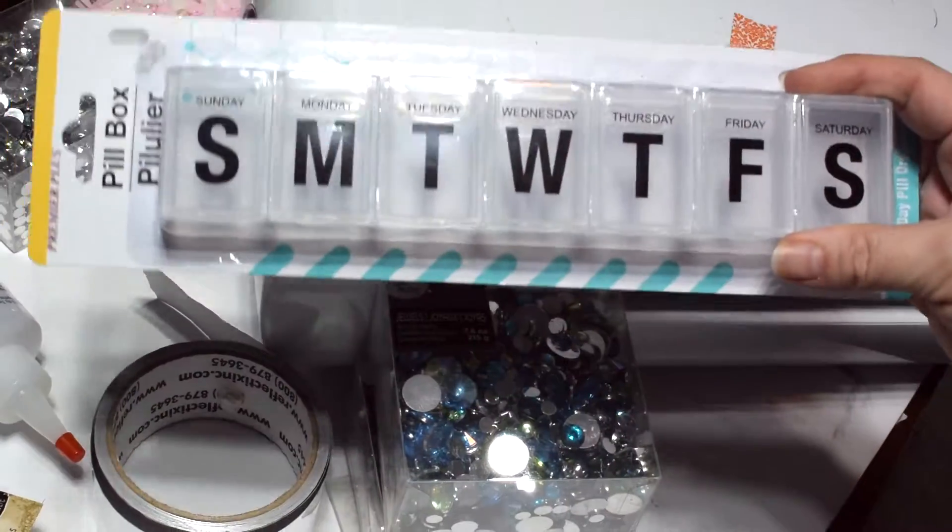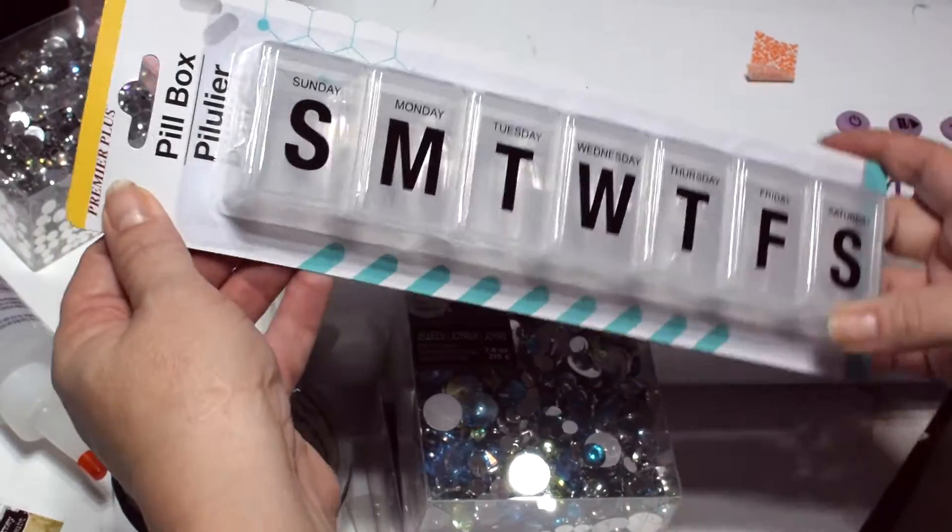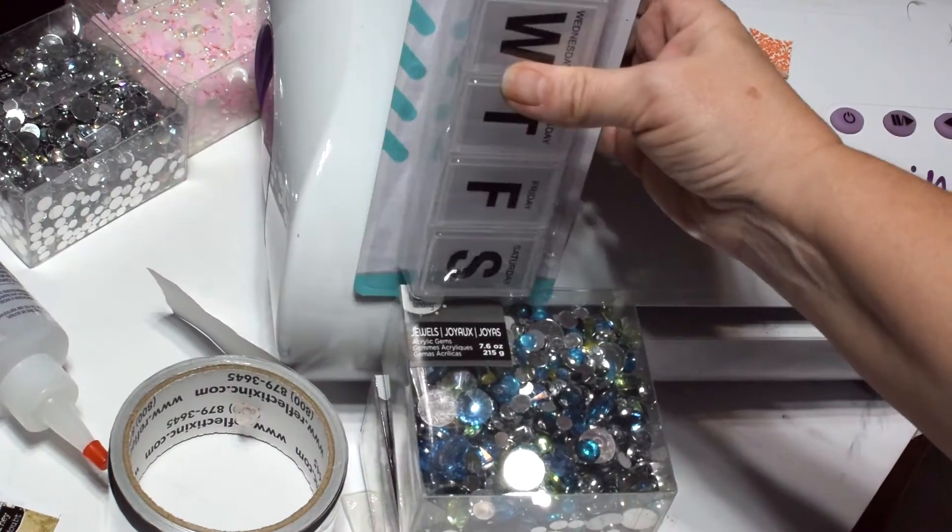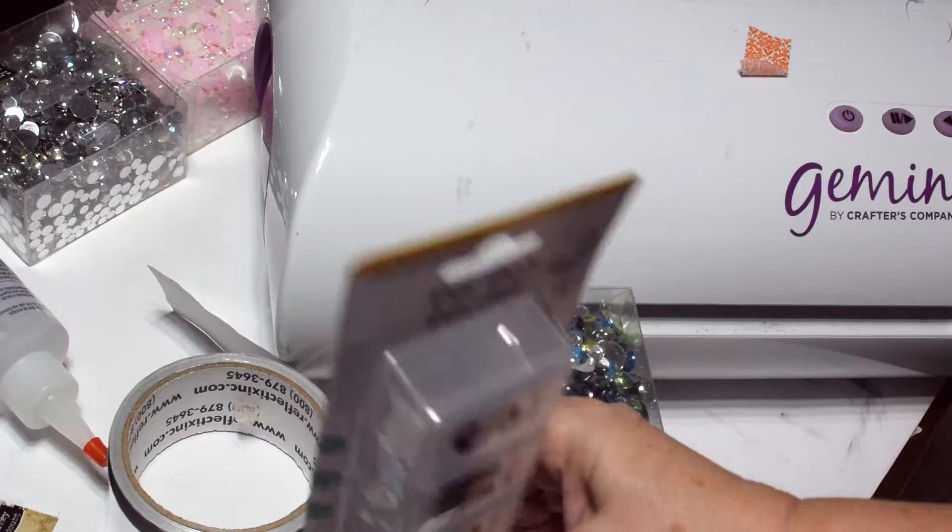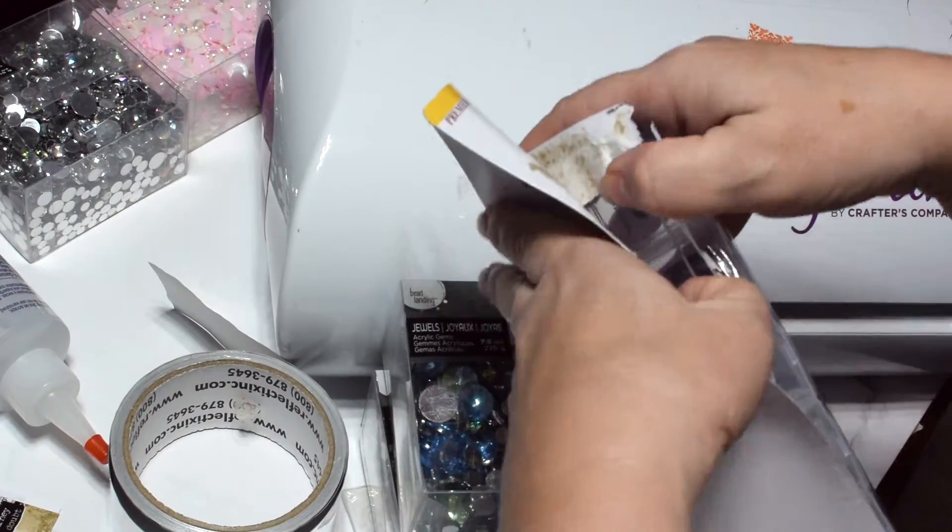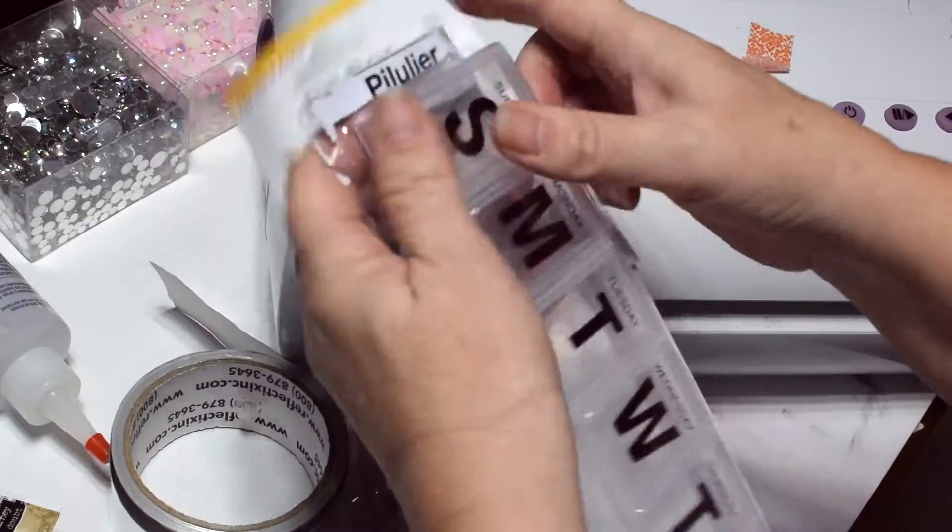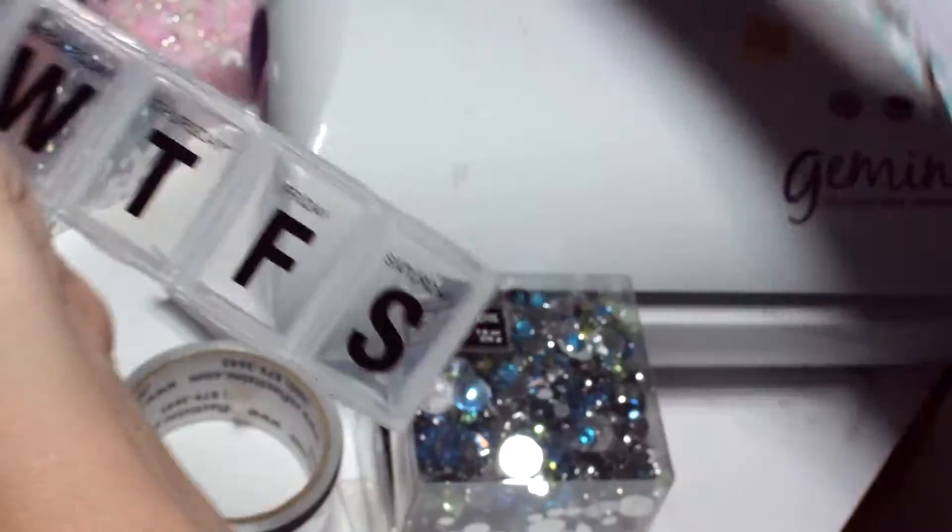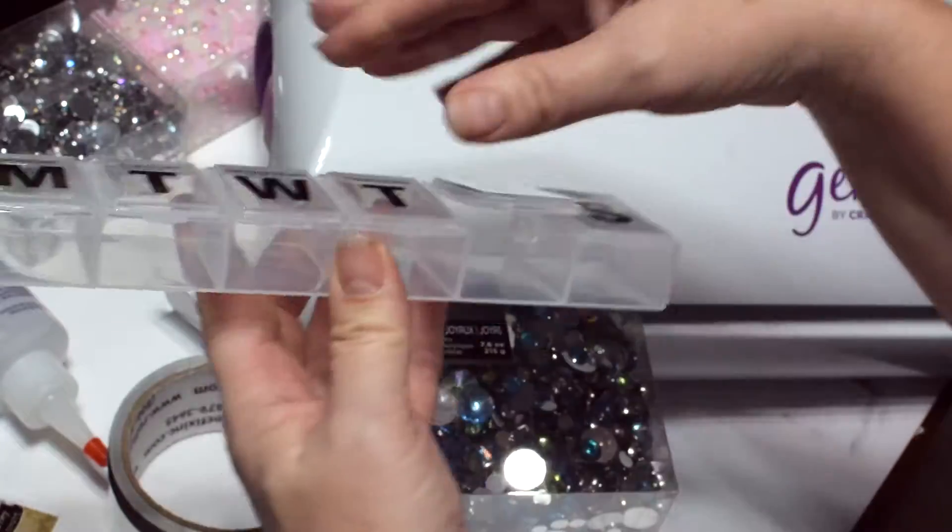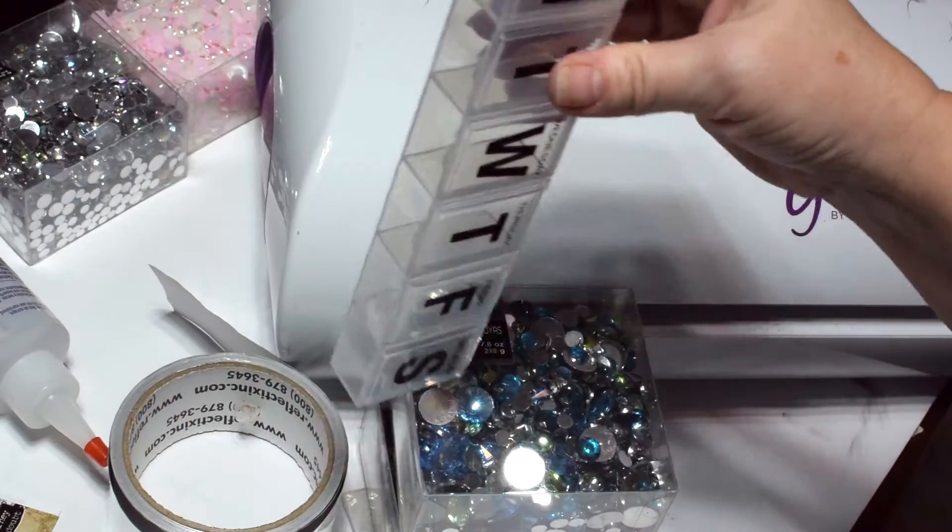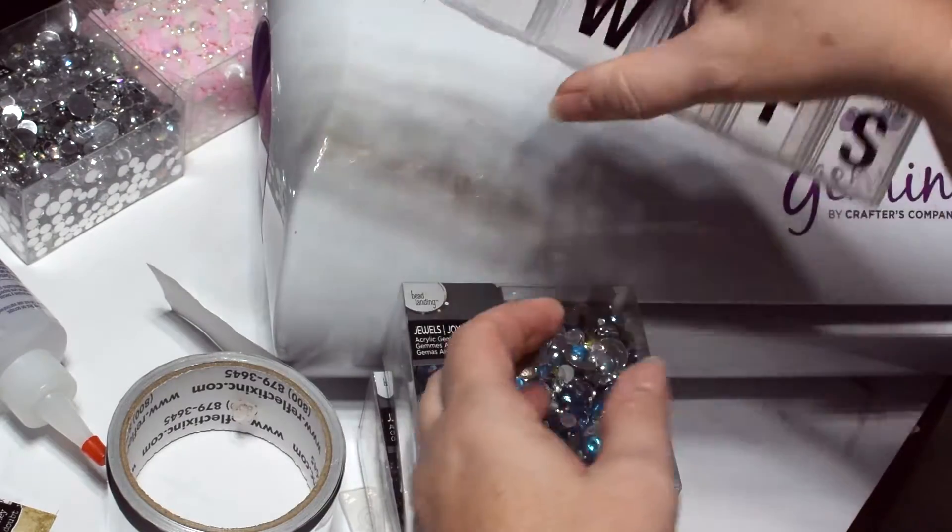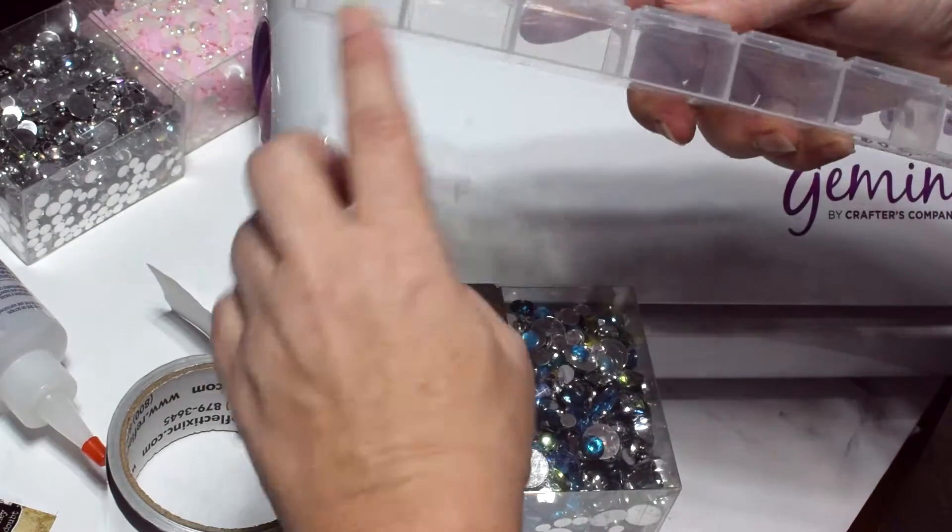When I was at the Dollar Tree, I saw this pill box and my thinking is I'll be able to store this vertically in a desk tidy type container. So the lid is going to lock, so I can store them upright and I'll be able to just open it up and see what colors I have.